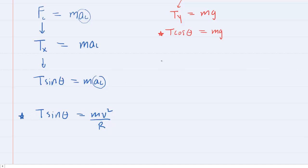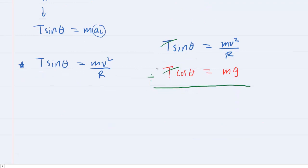We now have two equations, the one starred in red and the one in blue. We'll rewrite them on top of one another and divide these two equations. The tensions cancel because T divided by T is 1. Sine θ divided by cos θ is tangent θ. When you divide the right side, the masses cancel, leaving v² over R divided by g, which simplifies to v² over gR.